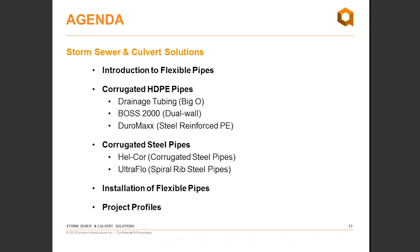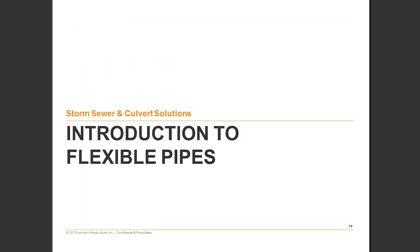Today's presentation will provide an overview of storm sewer and culvert solutions, application and best practices. I'll begin with a brief introduction to flexible pipes, then cover corrugated HDPE pipes including drainage tubing, dual wall corrugated HDPE pipes, and steel reinforced polyethylene. We will also cover corrugated steel pipes and spiral rib steel pipes, discuss best practices for installation, and then turn it over to Cody for the project profiles. There will be an open Q&A session at the end.